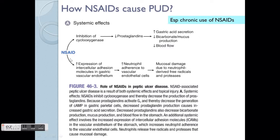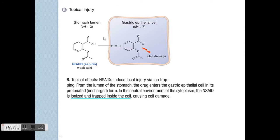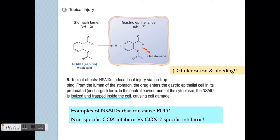Regarding NSAIDs — especially with chronic use — NSAIDs inhibit cyclooxygenase activity, which reduces the protective prostaglandins in the stomach. This causes increased gastric acid secretion and increased adhesion molecule expression, leading to more damage. Secondly, NSAIDs can also cause direct topical injury in the stomach itself. NSAIDs can become ionized and trapped in the cells, causing further damage. Overall, this leads to increased ulceration and bleeding.